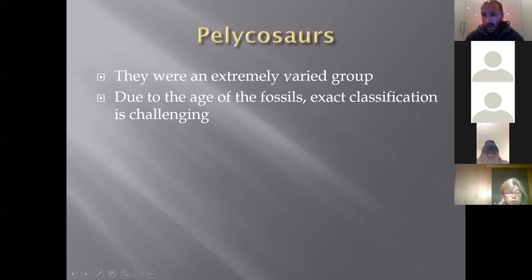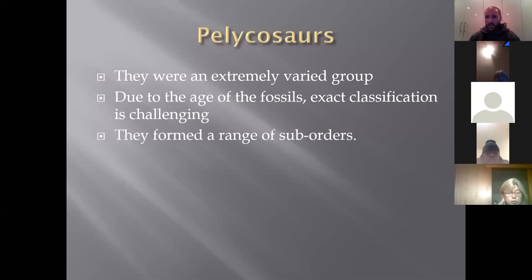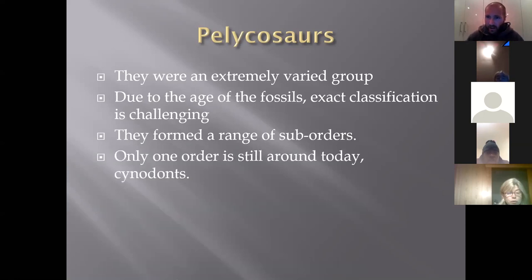We don't know 100% — we don't have all the bone remains — but assumptions were that the sails were partly for display and partly for thermoregulation. Due to the age of the fossils — 320 million years ago — exact classification is quite challenging. The fossils are subjected to so much tectonic action, plate movement, and erosion, and finding well-preserved fossils is quite challenging. The smaller ones were almost never preserved; it's the bigger ones that preserved well. They formed a range of sub-orders, and only one order is still around today — the cynodonts, literally meaning 'dog teeth.'